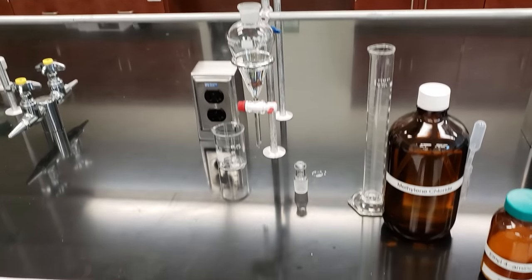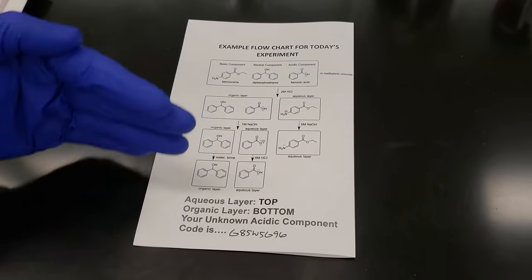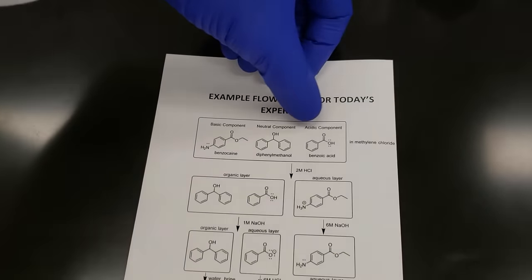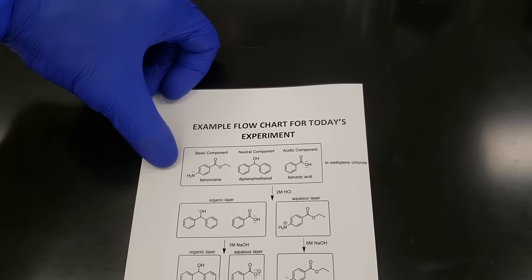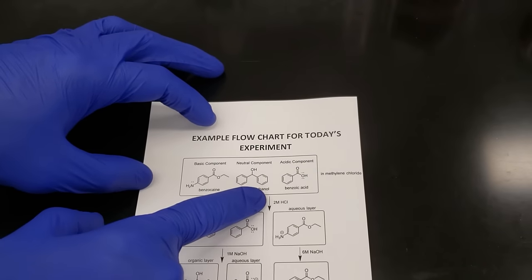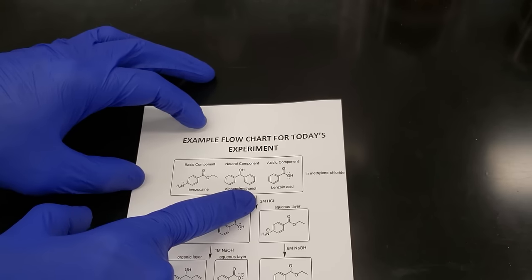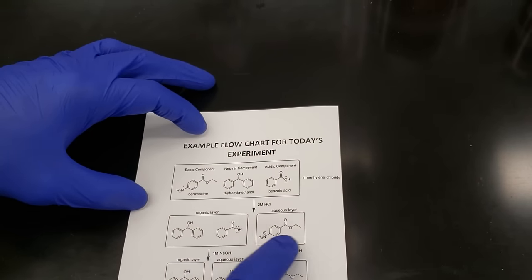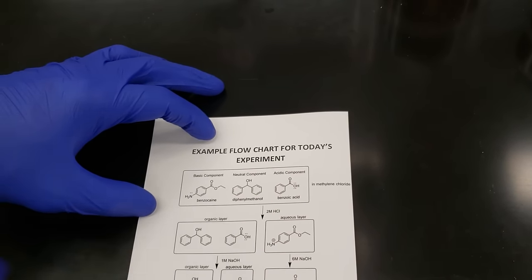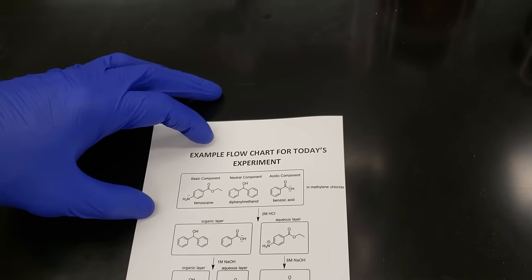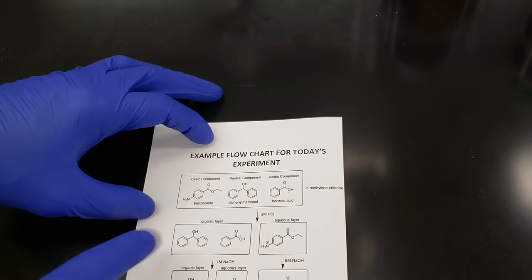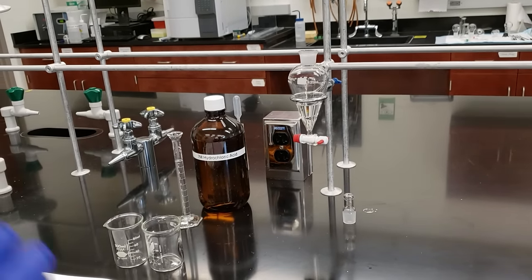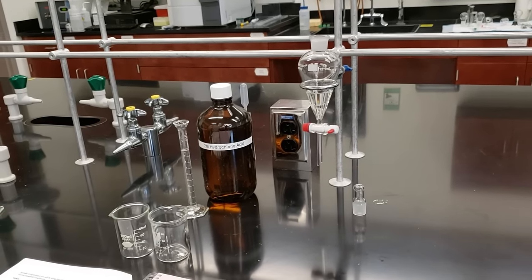Let's go ahead and take a look at our flow chart. We produced a flow chart showing the different steps of our reaction in a visual manner. We have all of our components — basic, neutral, and acidic — dissolved in methylene chloride. That's the step we're on right now. We're going to proceed to our first separation step, which is the addition of 2 molar HCl. That's going to result in the separation of our benzocaine from our diphenyl methanol and our benzoic acid. We'll go ahead and add our 2 molar HCl to isolate our basic component, benzocaine.